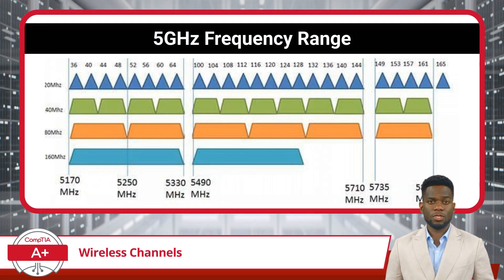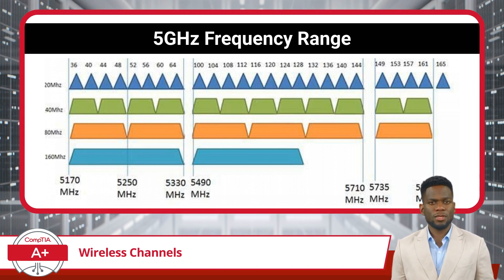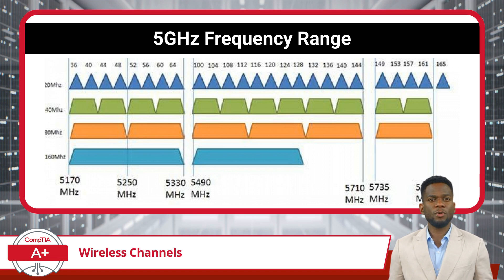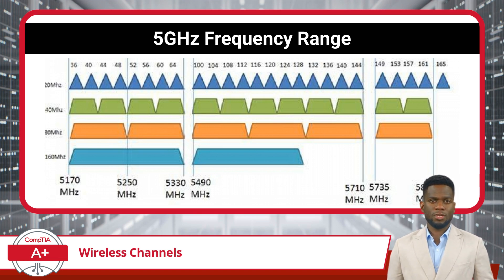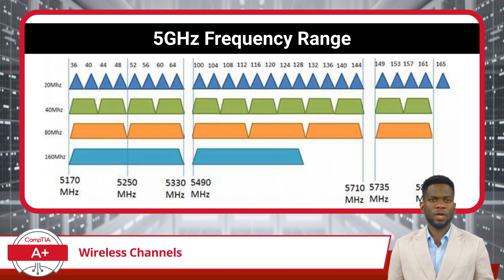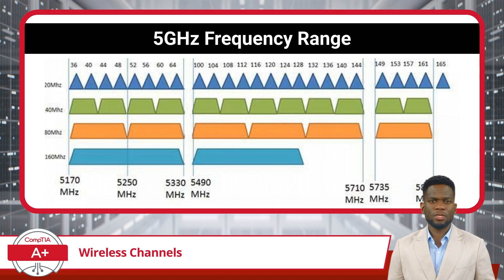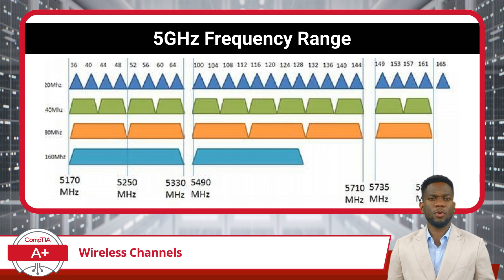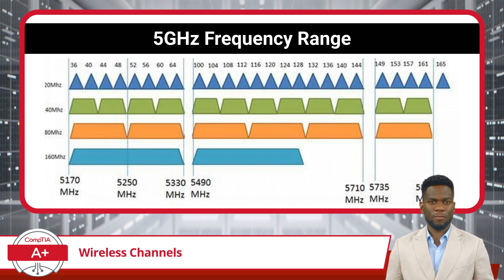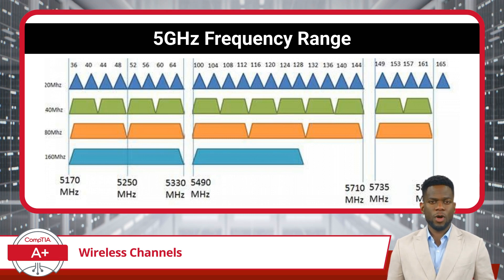With the 5 GHz band, we experience faster data transmissions and less signal interference. This band, depending on your country, will have 20-plus non-overlapping channels available for use, with each channel being 20 MHz wide. However, through channel bonding, these 20 MHz channels can be merged to form wider channels of 40, 80, or even 160 MHz. This channel bonding process enhances data throughput, making it ideal for applications that require high bandwidth.